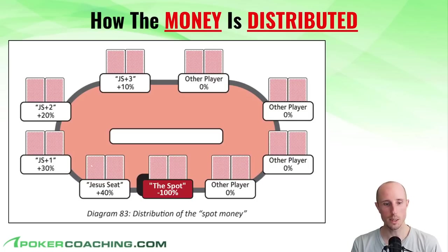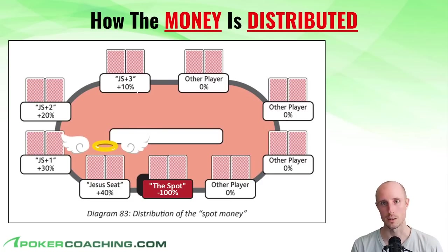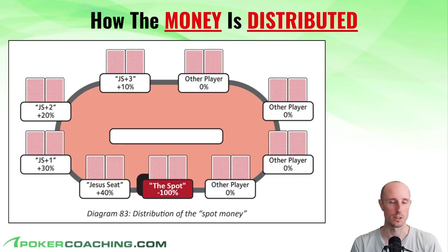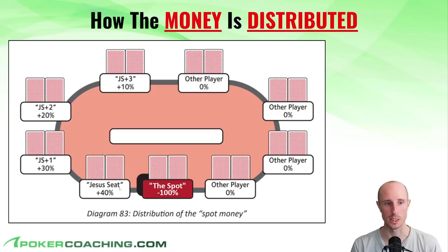Who's going to pick up that money? Typically the player who has direct position on the spot — the person on their direct left — is going to get the majority of that money, around about 40% of what's lost. This goes to the person on the left who is in what's known as the Jesus seat. We call it the Jesus seat because when you have direct position on the spot, you're basically playing on God mode. To the left of the Jesus seat, that player is expected to get about 30% of the spot's money — still significant, but less than the player with direct position.